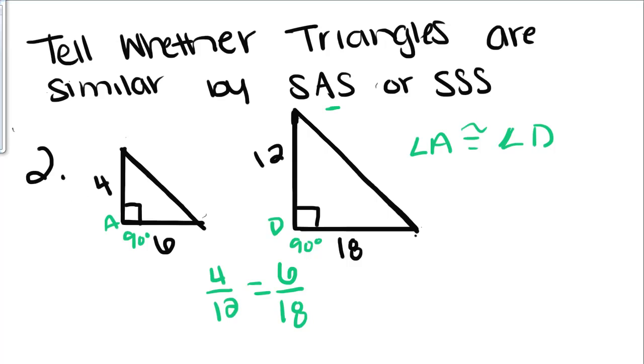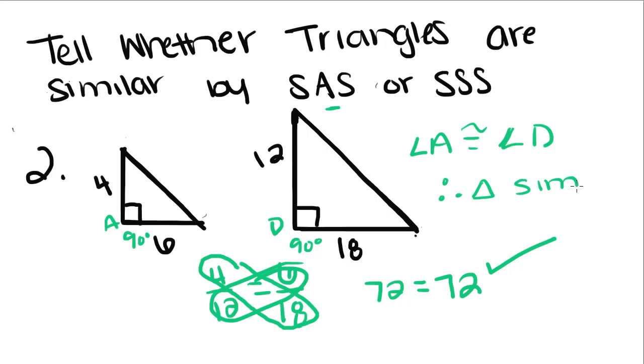So then we're going to cross-multiply, and you get 72 is equal to 72. So those sides are proportional. So therefore, these triangles are similar by side-angle-side.